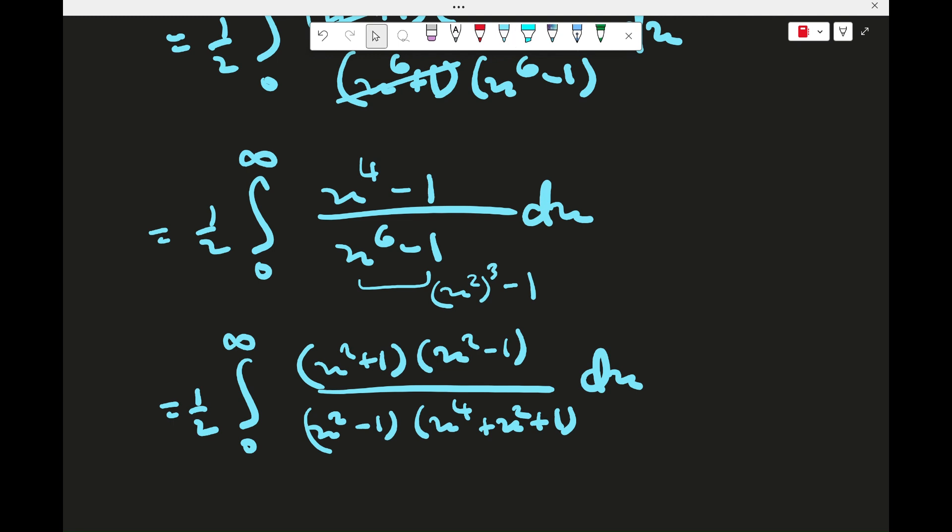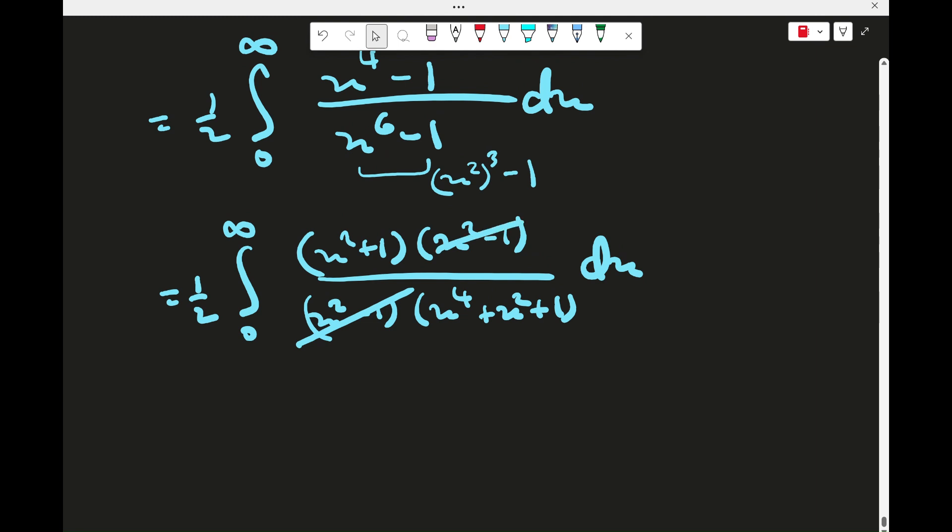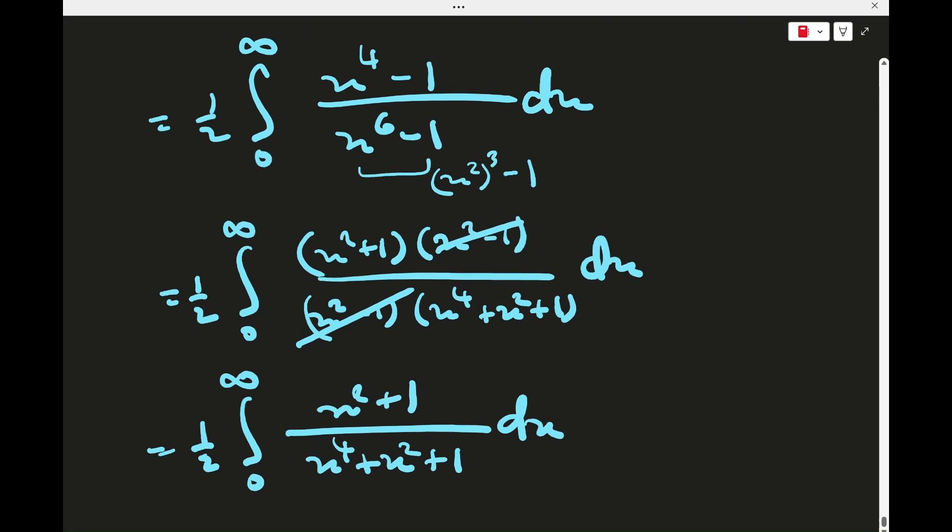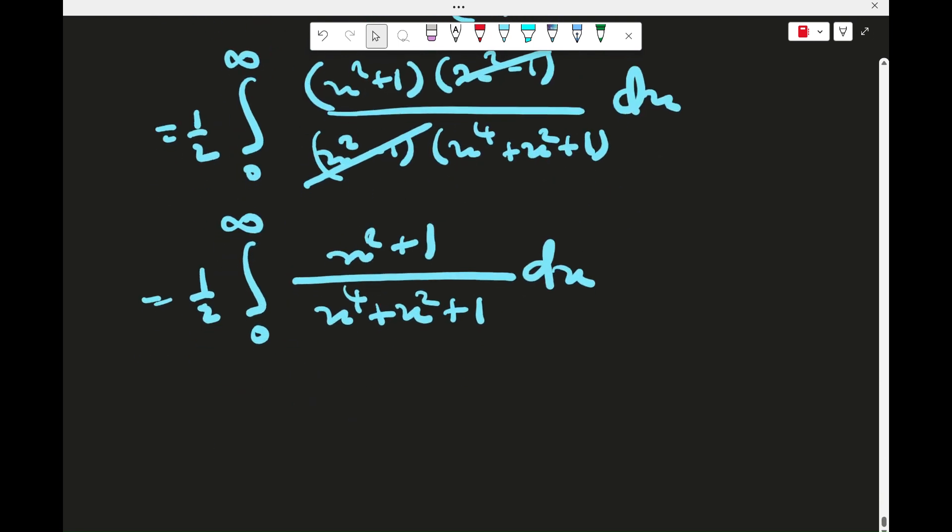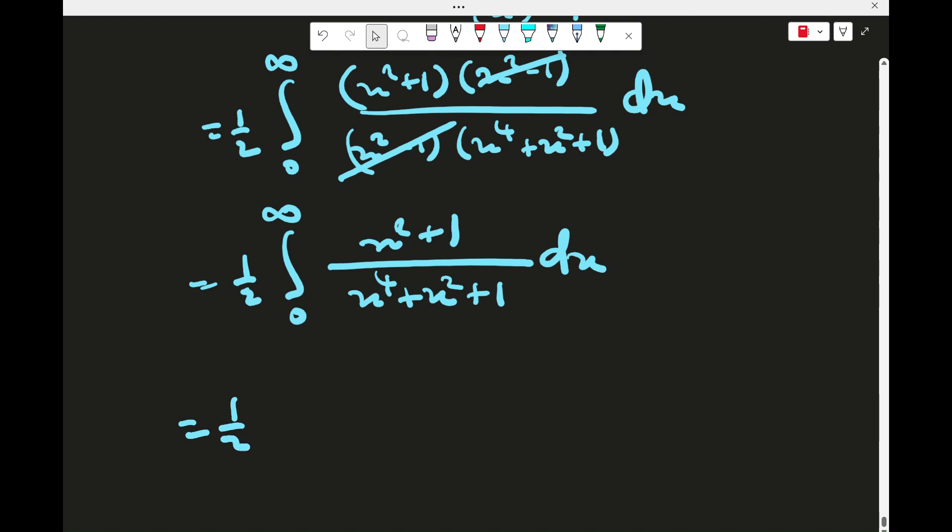Okay, that's good, because now we can cancel these out and we're simply left with x squared plus 1. I can see the light now. I can see that this is going to work. So divide top and bottom by 1 on x squared. This way we get a 1 plus 1 on x squared at the top, and at the bottom we get x squared plus 1 plus 1 on x squared.